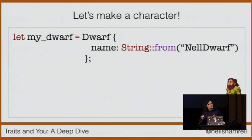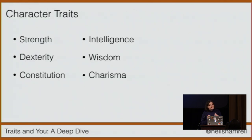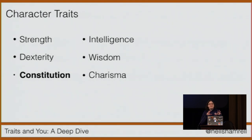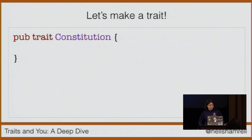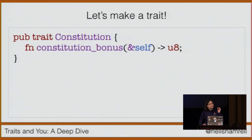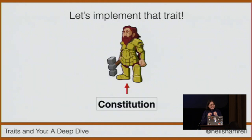Now that we have a basic character, we need to add certain traits to it. Every D&D character has six core traits: strength, dexterity, constitution, intelligence, wisdom, and charisma. For now let's just focus on constitution. We need a way of giving our dwarf character a constitution. So let's make a public trait called Constitution. In this trait we define one function: constitution_bonus. Notice that we don't define how this function is carried out — we just define the name of it, what we expect passed to it, and the expected output, which in this case is a U8 number. Now we need to implement this Constitution trait on our dwarf struct. It should have all the functionality of this trait but be able to override parts of it as needed.